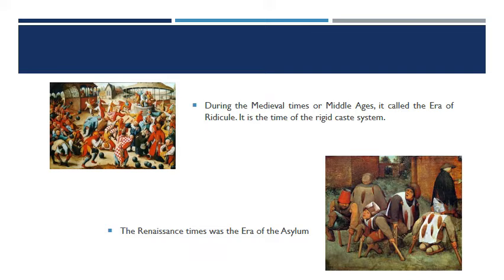During the medieval times or the Middle Ages, it is now called the era of ridicule or humiliation. Those with disabilities were used as servants or fools, some were still put to death, and dwarves were even used as clowns — ridiculed for deformities and behavior. It was also a time of a rigid caste system, presenting the idea that if you are poor or defective, you are outcasted from the community. There was a very high manifestation of exclusion during the medieval period.